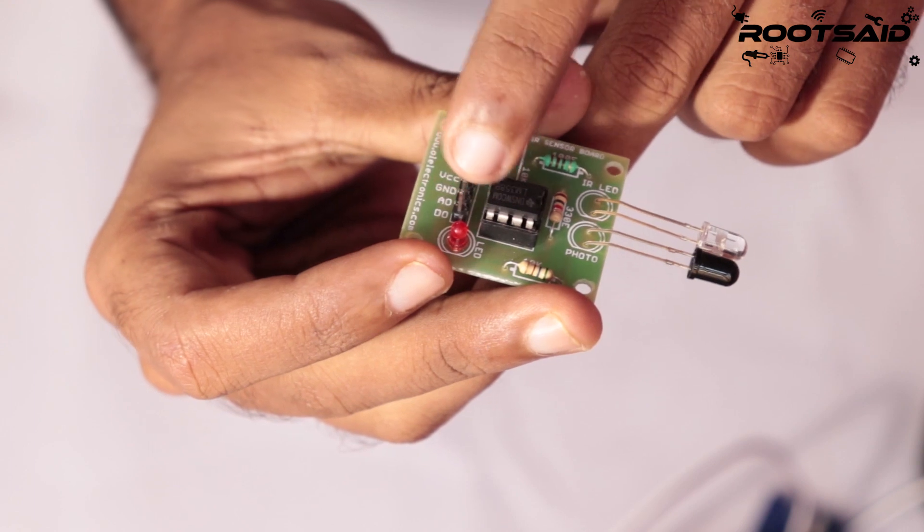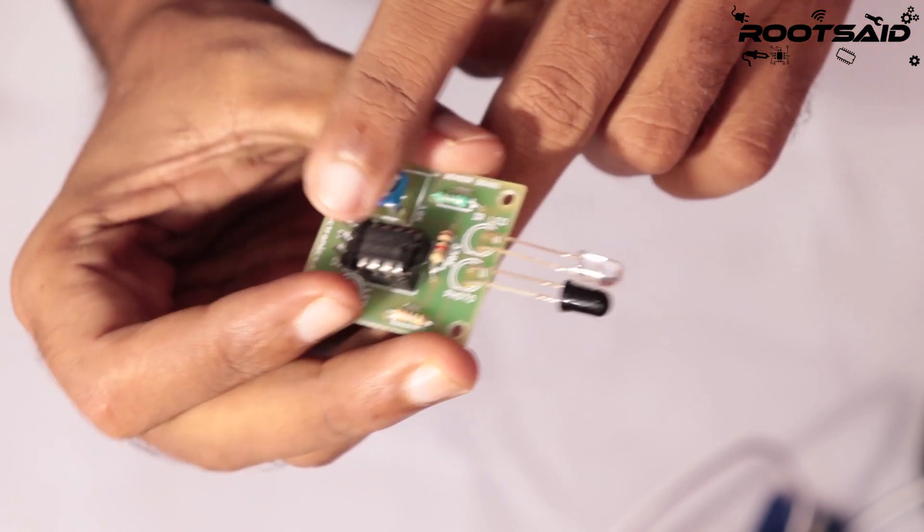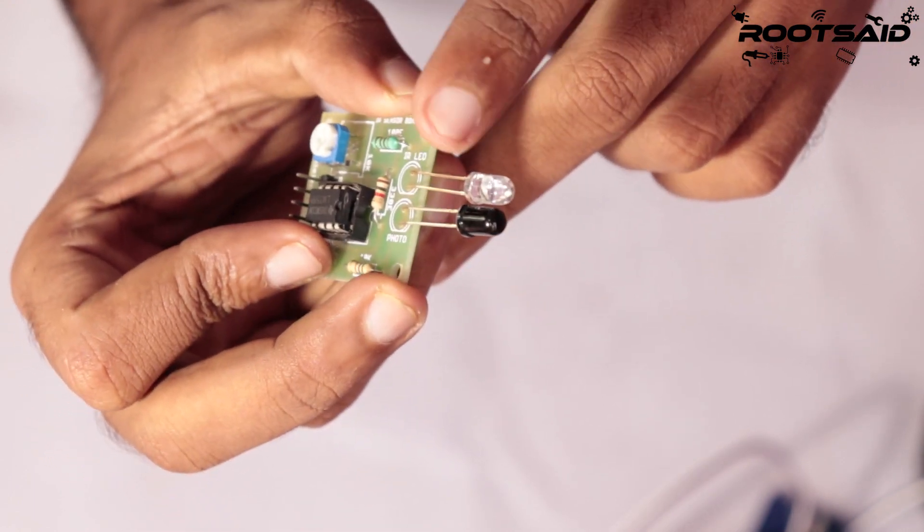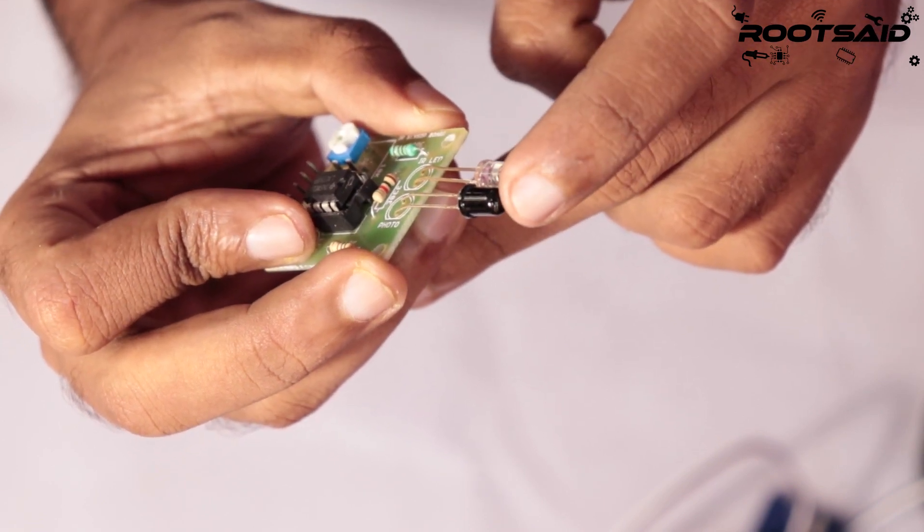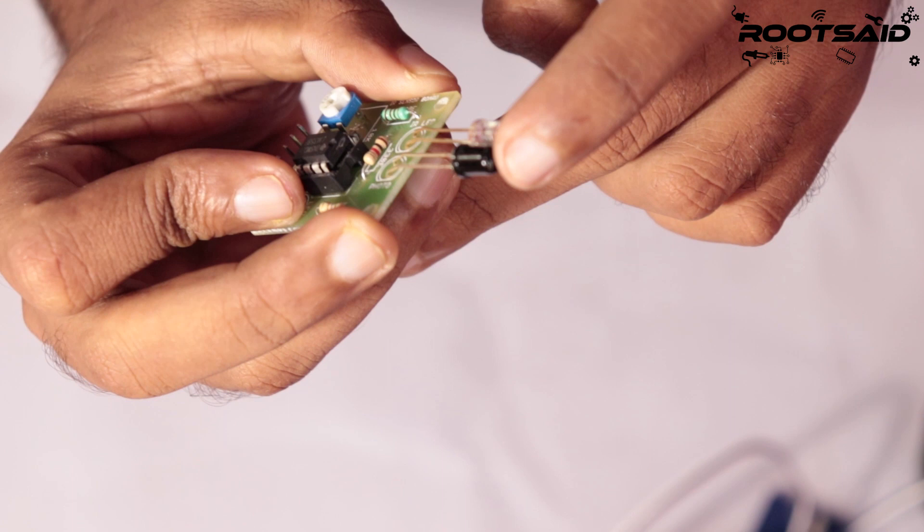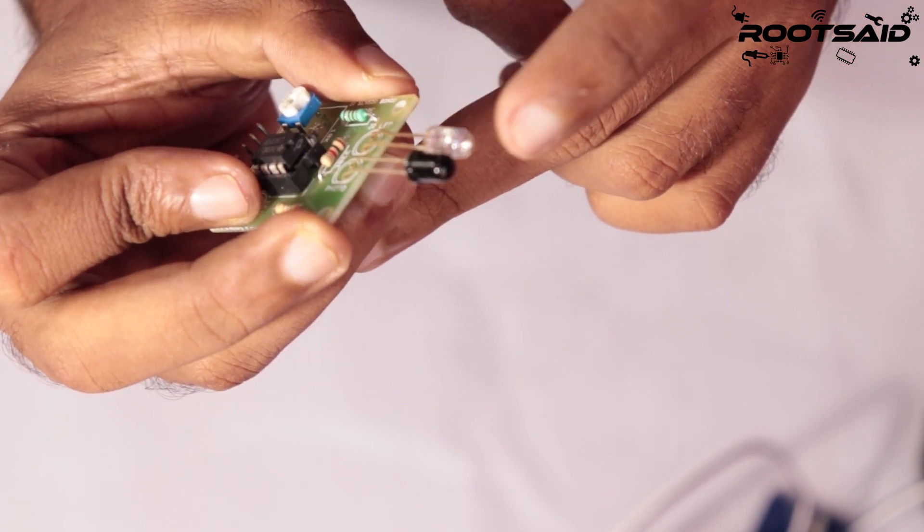IR sensor or infrared sensors mainly consist of an IR transmitter, usually an IR LED, and an IR receiver, usually a photodiode. IR LED always emits IR rays in the direction it is pointing to.